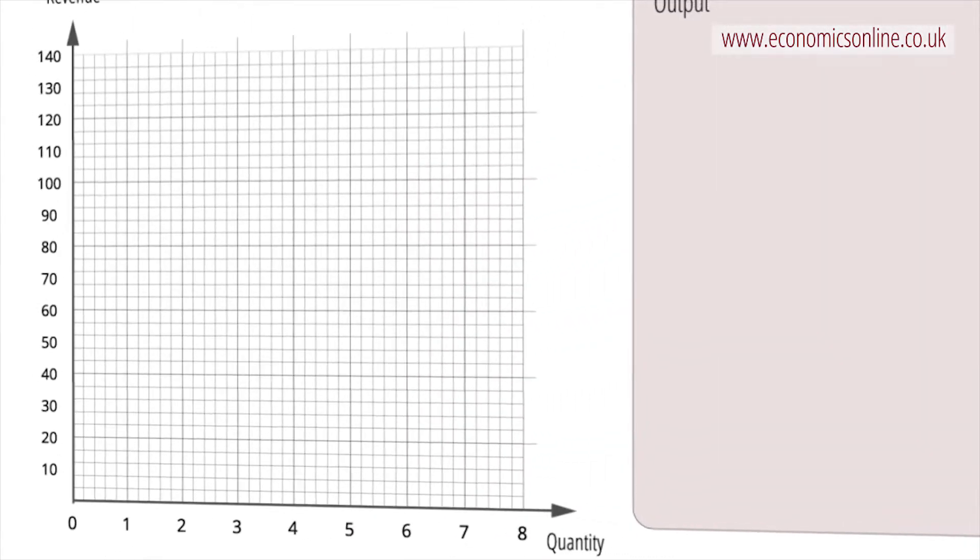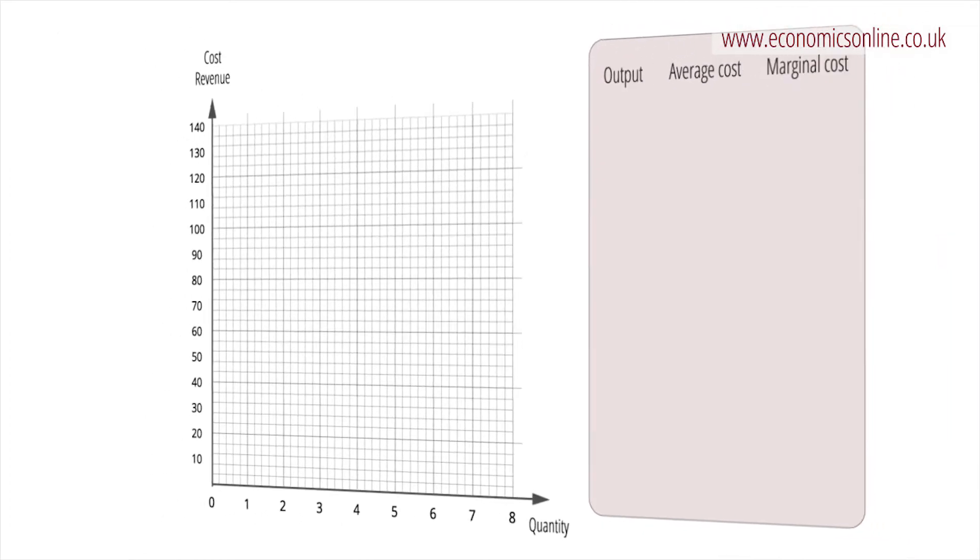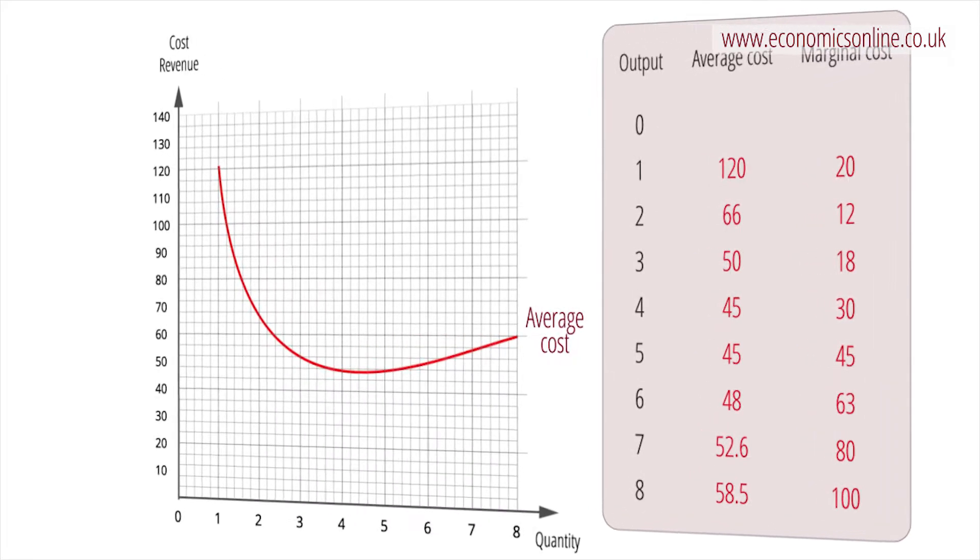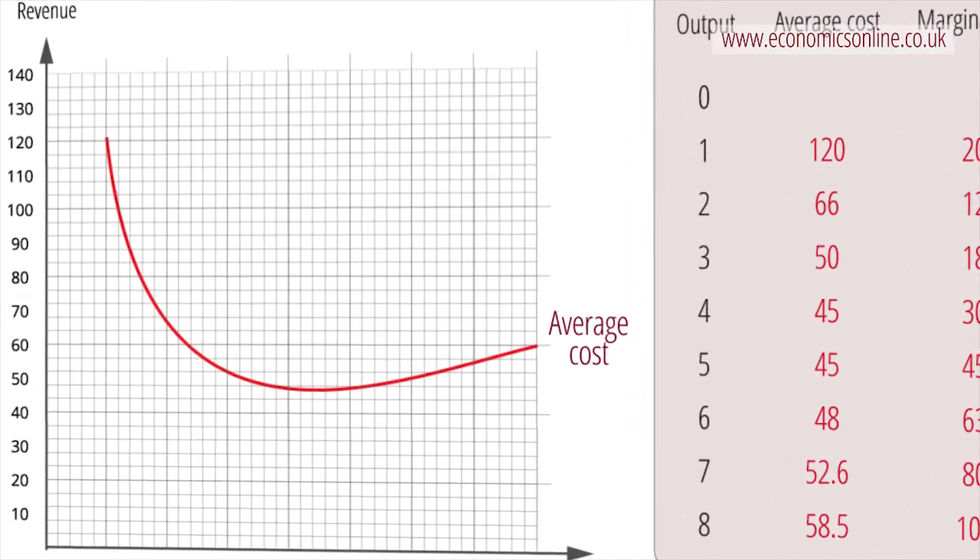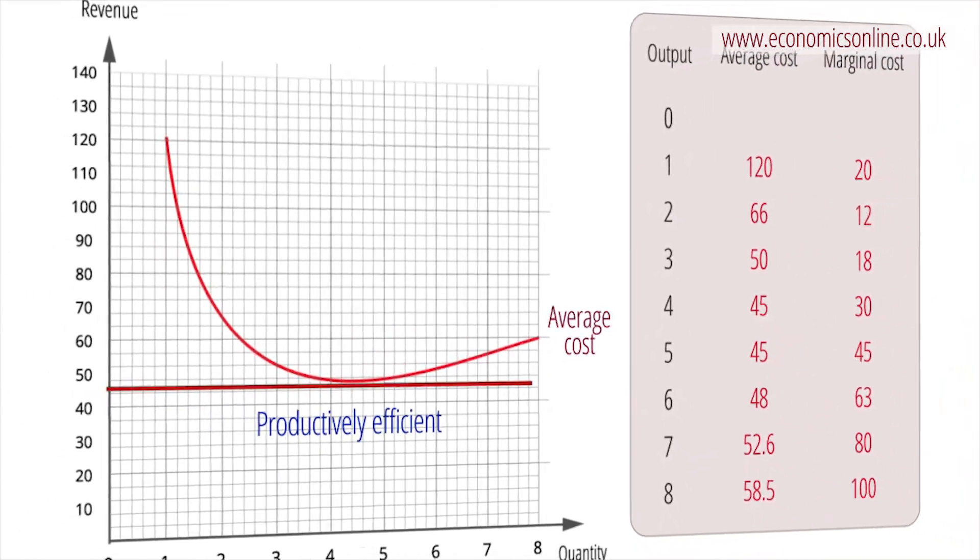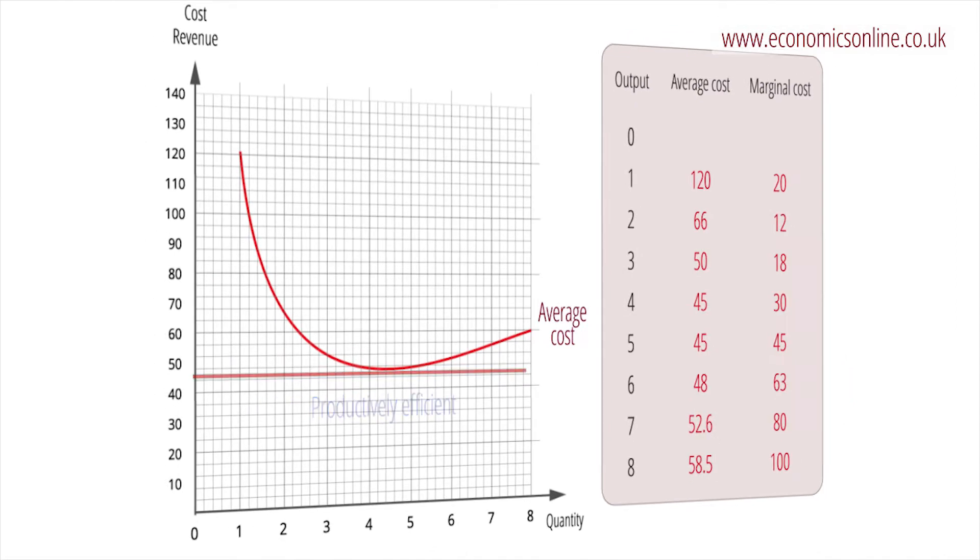Average costs are found by dividing total cost by output. Its curve is typically U-shaped. Average costs are significant because they indicate how efficiently resources are being used. When they are at their minimum, the firm is said to be productively efficient. Graphically, total costs can be shown as the area under the average cost curve.